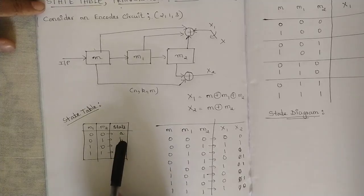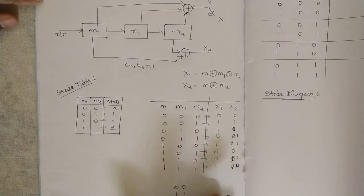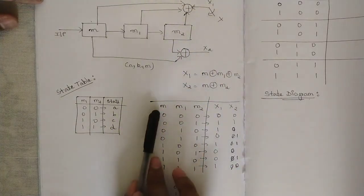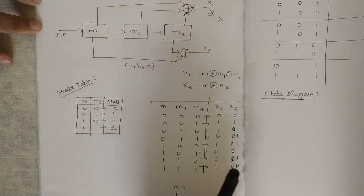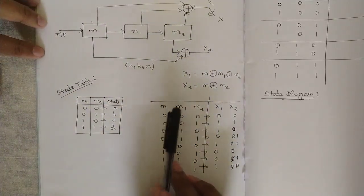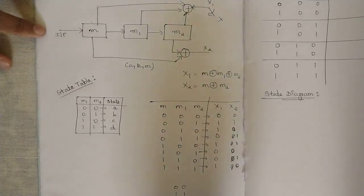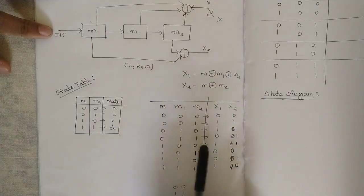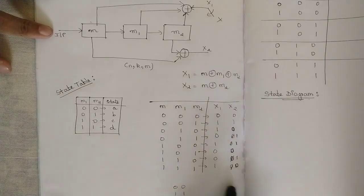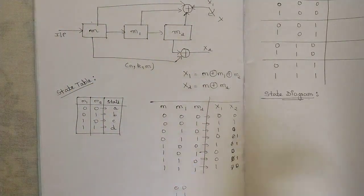For 10 I have defined state C, and for 11 state D. Now with respect to the values of m, m1, and m2, you write the sequence and calculate x1 and x2. There are three bits so eight combinations from 000 to 111. I have substituted and calculated x1 and x2 for each combination — this part is optional, but it is good to do. Pause the video and refer to it.